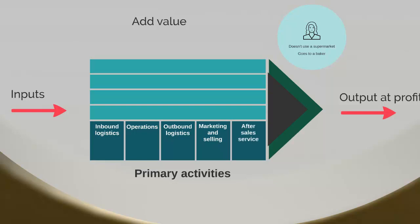The final primary activity is after-sales service. Many of us have had issues with products — ovens, washing machines, etc. — and it really makes a difference as a consumer if a company has good after-sales service. If when something goes wrong you can contact them easily and they can solve the issue you are having, that really adds value to the consumer.